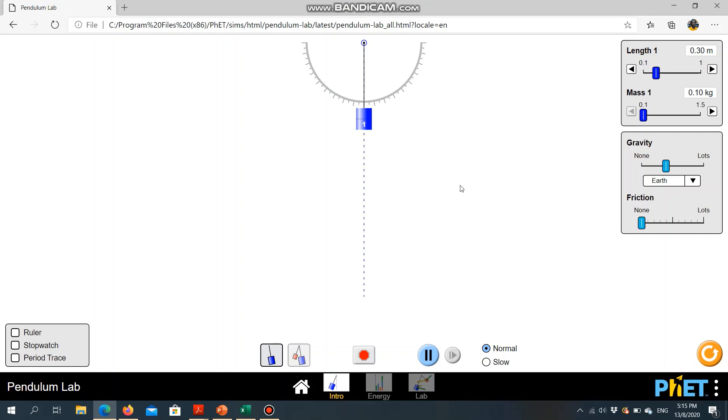And then, we can increase the length. We are going to increase the length and say at 0.4 meters. We are going to allow the pendulum to swing once more, and then we time 10 oscillations. Let's say we start now. 1, 2, 3, 4, 5, 6, 7, 8, 9, 10. That's 12.81 seconds.